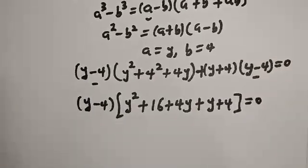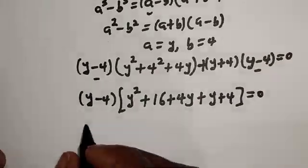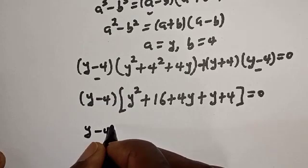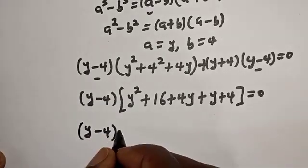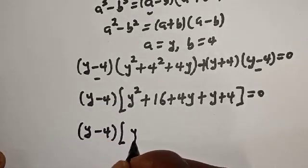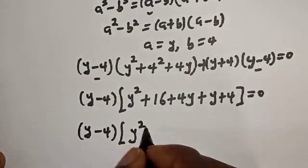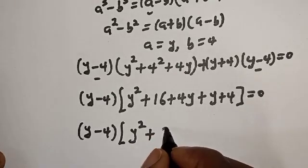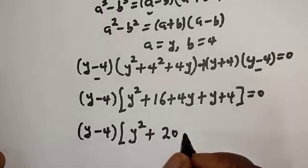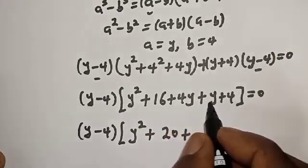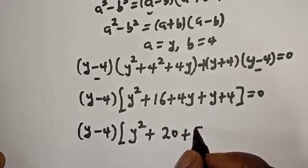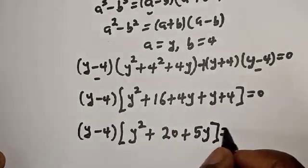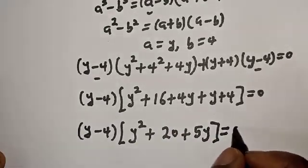This gives us (y minus 4)(y² plus 16 plus 4y plus y plus 4), which simplifies. The 20 plus 4y plus y gives us 5y, so we have (y minus 4)(y² plus 5y plus 20) equals 0.